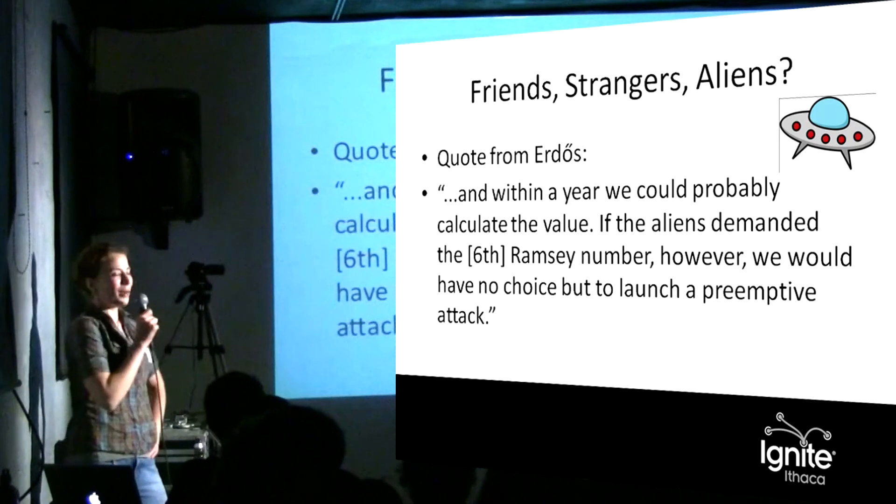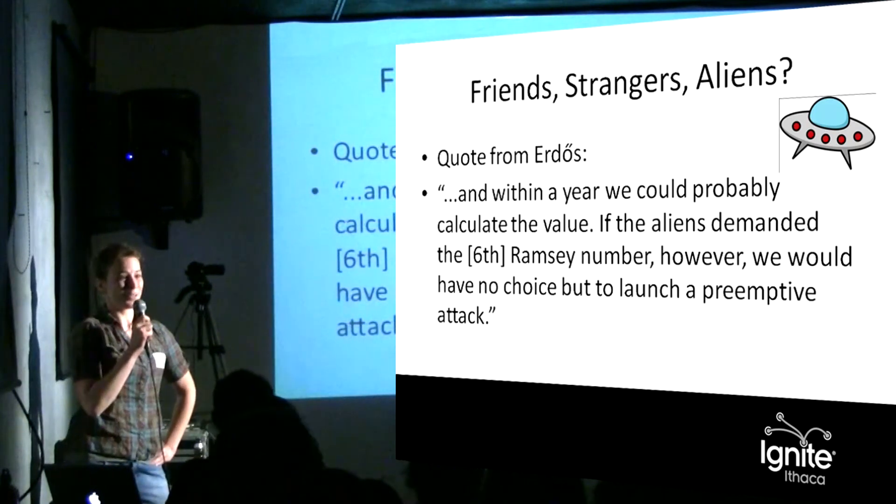If they demanded the sixth Ramsey number, we would have no choice but to kill all the aliens, because there's no other way we're getting that number. So these problems that are really easy to state can be ridiculously difficult.